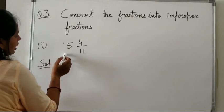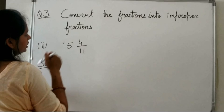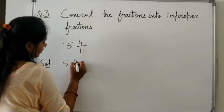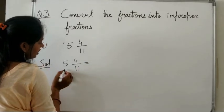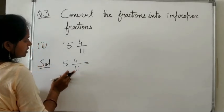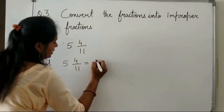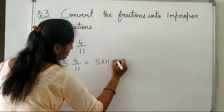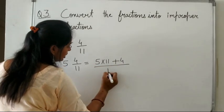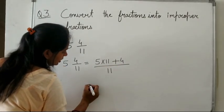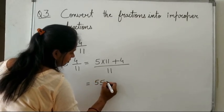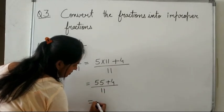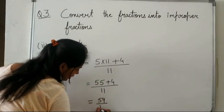Next, convert 5 and 4 upon 11 to an improper fraction. We multiply 5 by 11 and add the numerator 4: 5 × 11 = 55, plus 4 = 59, over 11. So 5 and 4 upon 11 equals 59 upon 11.